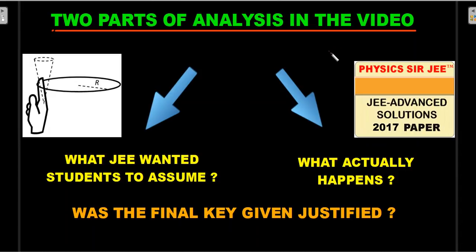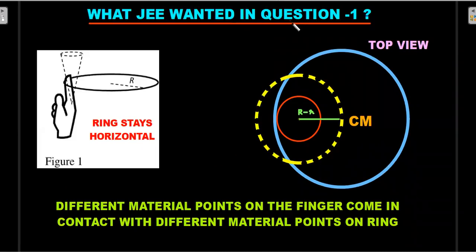We'll also finally look at whether the final key given was justified. Starting with question one on kinetic energy: JEE wanted the ring to stay horizontal. In the top view, the blue circle represents the ring at one position. The red structure is the small circle — the point of contact's circular motion. The small radius of that circle is smaller, and the radius of the ring is capital R. Different material points on the finger come in contact with different material points on the ring, just as in the hula hoop case.